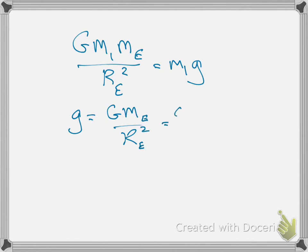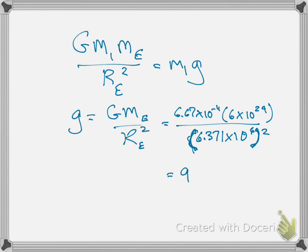And we can go ahead and plug those numbers in, plug them all in using MKS units. And when I plug this all into my calculator, I get 9.8 meters per second squared.